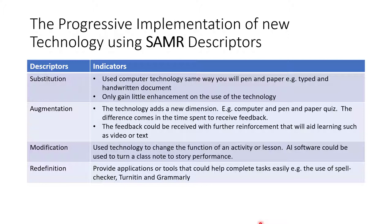The second descriptor is augmentation. With augmentation, the technology has a new dimension — for example, computer versus pen-and-paper quizzes. The difference comes in the time spent to receive feedback. The feedback could be received with further reinforcements that aid learning, such as videos or tests. When this happens, you are augmenting.